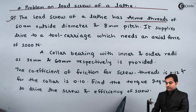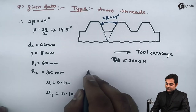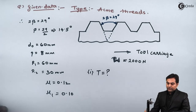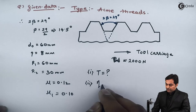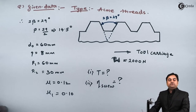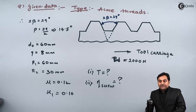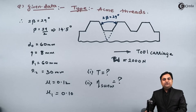We have to find: first, the torque required to rotate the screw; and second, the efficiency of the screw. These are the two questions we need to answer with the available data. Let us now proceed to the solution.